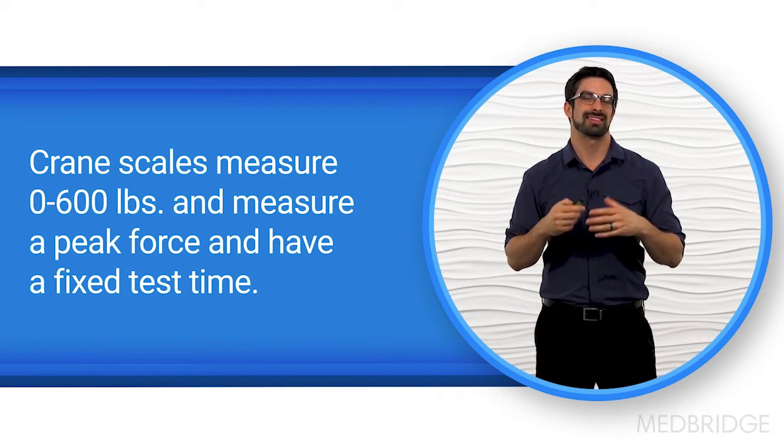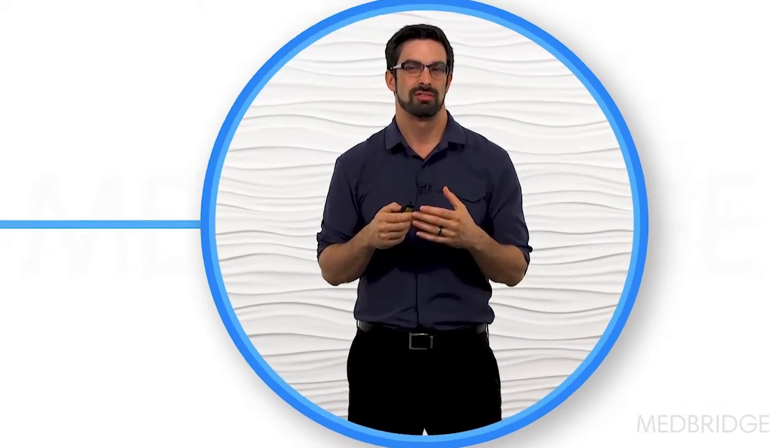And the final option is a dynamometer. These are more expensive. They're used in research. They're about $1,000 onwards and upwards. And they measure 0 to 300 pounds and they have additional parameters that they test.